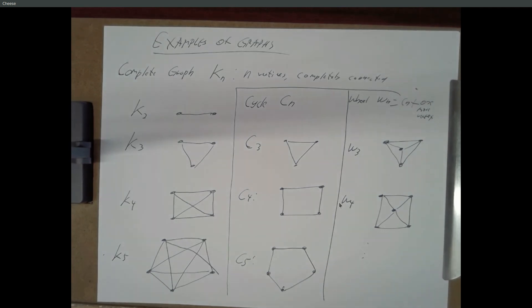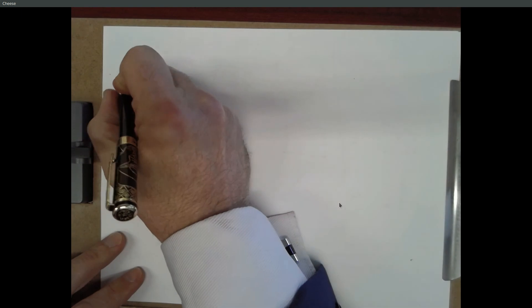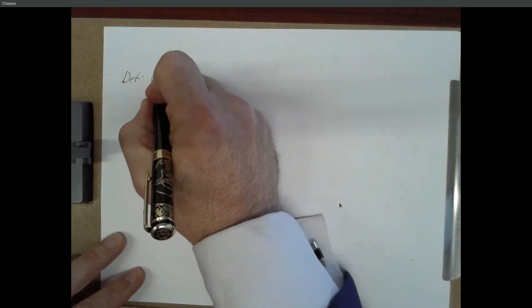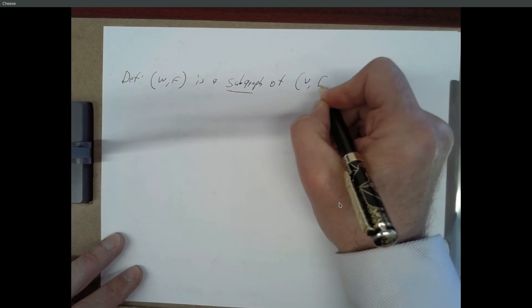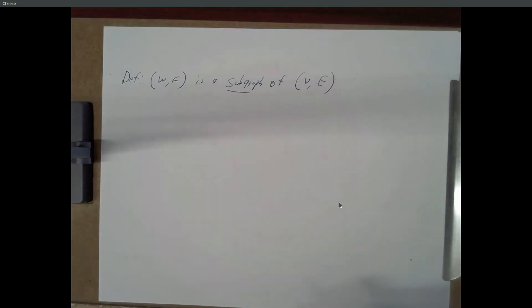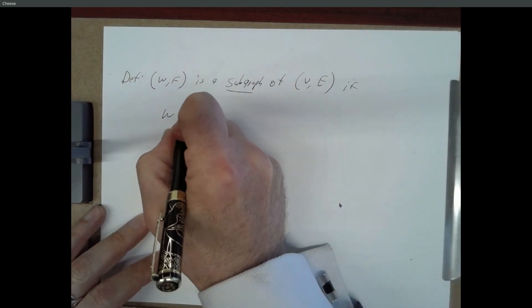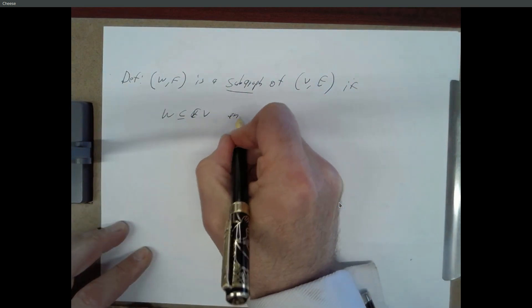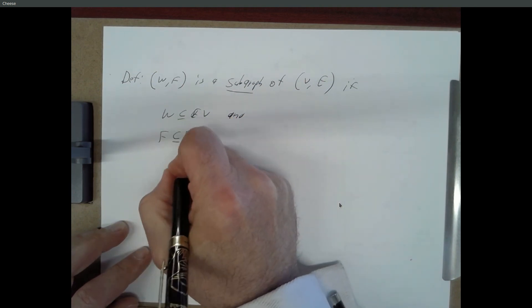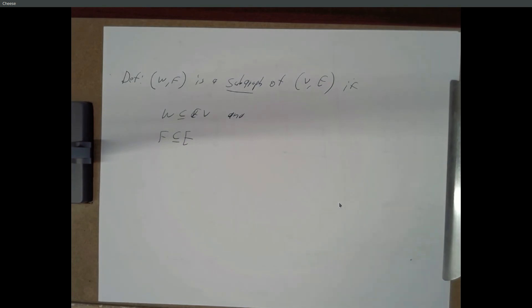So, we'll do a formal definition of sub graph and then we'll call it quits for the week. So, definition. So, a graph W comma F is a sub graph of the graph V comma E. If the set of vertices over here is a subset of the vertices over there. And the set of edges is a subset of the set of edges. So, kind of what you might expect. So, take a graph, throw away some vertices and edges, you've got a sub graph. Just like take a set, throw away some elements, you've got a subset. Basically the same concept.